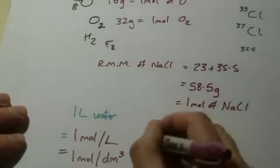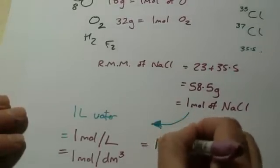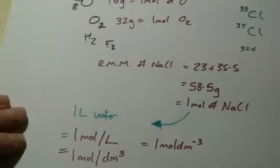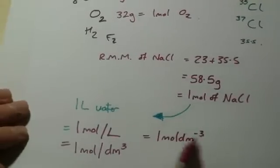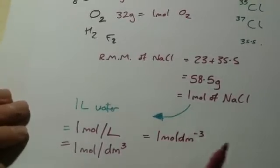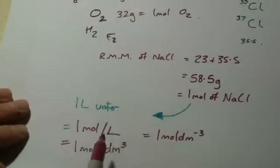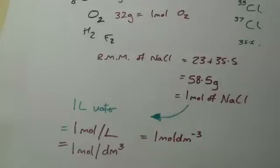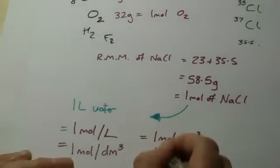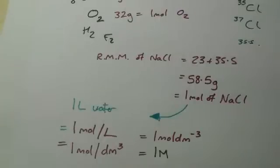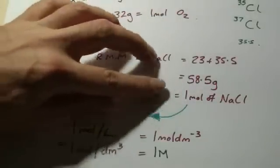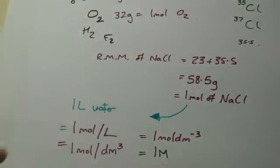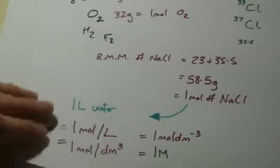All of these things are the same: one mole per liter, one mole per decimeter cubed. It's exactly the same thing. In fact, we can simplify that even further and simply say a one molar solution (1M). So a one molar solution of sodium chloride would be 58.5 grams dissolved in one liter of water.